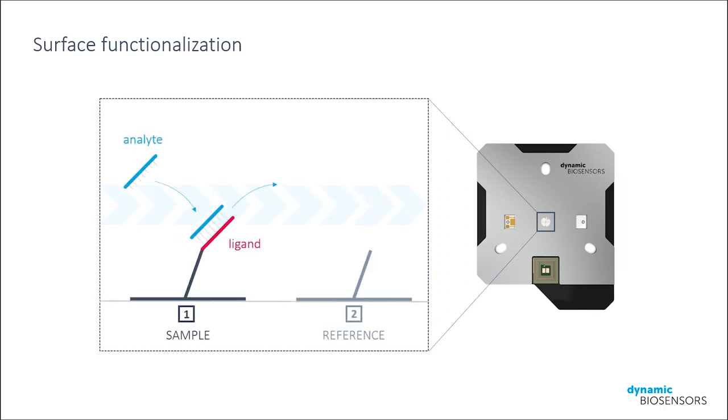On the sample spot we're going to immobilize one of our binding partners, while the reference spot remains unmodified. In our case, the immobilized ligand, as you may remember, is a single-stranded seven base sequence, and the analyte in solution is its complementary strand. Shown in grey here are linkers which connect the ligand to the chip surface. Let's have a closer look at how they're set up.